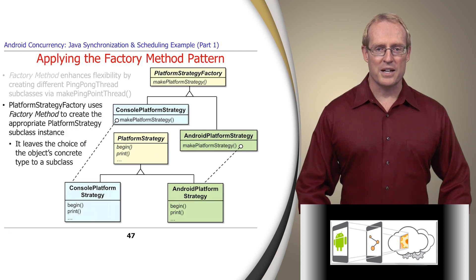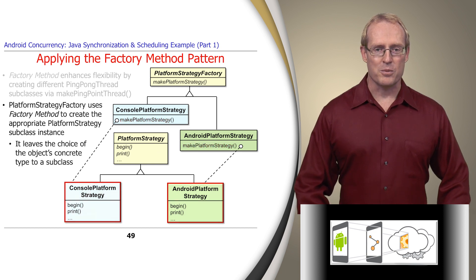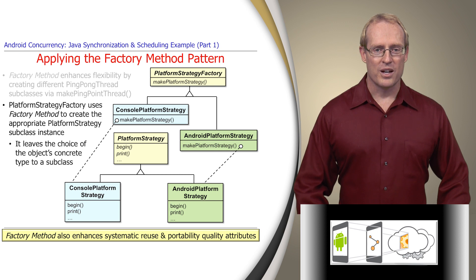The ping pong program also applies this pattern to the platformStrategyFactory that creates the appropriate instance of the platformStrategy subclass. In particular, depending on the settings of the Java specification vendor system property, the makePlatformStrategyFactory method creates either an instance of the AndroidPlatformStrategy or the ConsolePlatformStrategy, respectively. In addition to enhancing flexibility, the factory method pattern enhances systematic reuse and portability by enabling the family of ping pong programs to vary transparently and run on different platforms without requiring any changes to the rest of the framework or application code.